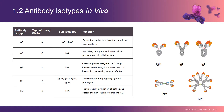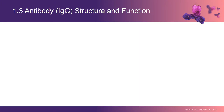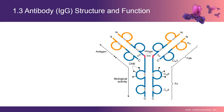Unlike gamma and alpha chains which have 3 C-region domains, the mu chain has 4. The five carbohydrate groups are in the CH1 and CH3 domains and in the part of the mu chain where the J chain binds. We have explained the function of antibody; here is a simple structure map of IgG.